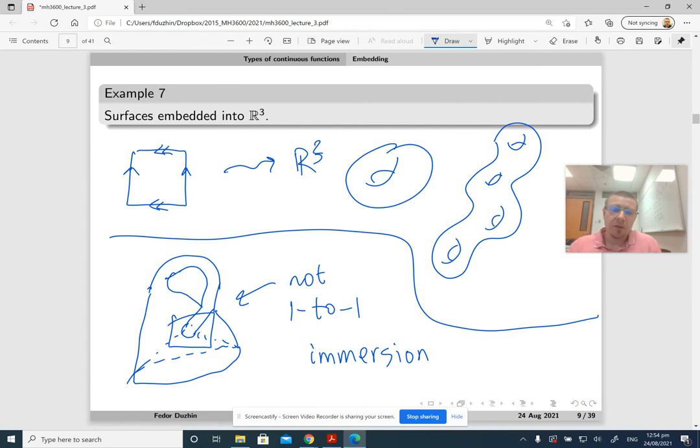And it can be proved that the Klein bottle cannot be embedded into the 3D space and the projective plane cannot be embedded into the 3D space but they can be embedded into the 4D space. But to prove that they cannot be embedded into the 3D space is quite tricky - you need to know a lot of machinery from algebraic topology to do that.